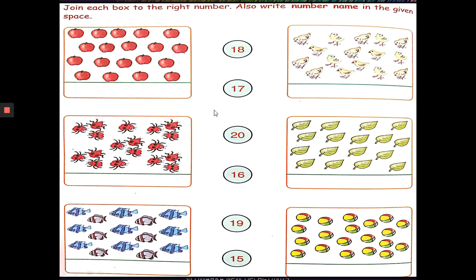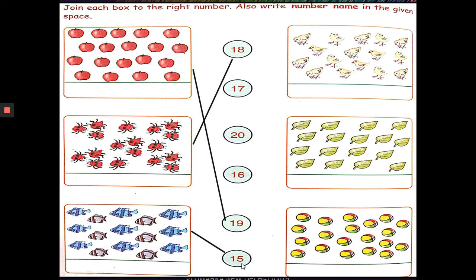Now the next page. The same question is there. Let us match the numbers with the things. So how many apples are there? 1, 2, 3, 4, 5, 6, 7, 8, 9, 10, 11, 12, 13, 14, 15, 16, 17, 18, 19. So it is matched with the number 19. Then how many ladybugs are there? 18. So it is matched with the number 18. 15 fishes are there, matched with number 15. How many birds? 16 birds, matched with the number 16.